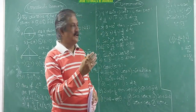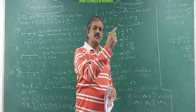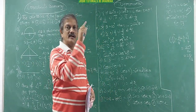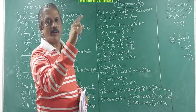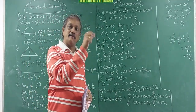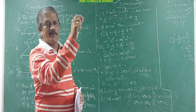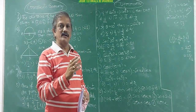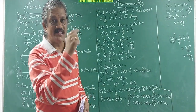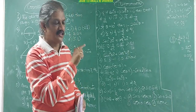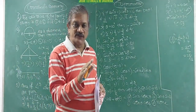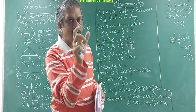Next you should go for the section formula: (m1·x2 + m2·x1) divided by (m1 + m2), comma (m1·y2 + m2·y1) divided by (m1 + m2). The midpoint formula is (x1 + x2)/2, (y1 + y2)/2. The last one is the area of a triangle when three vertices x1y1, x2y2, x3y3 are given — there is a formula for that.